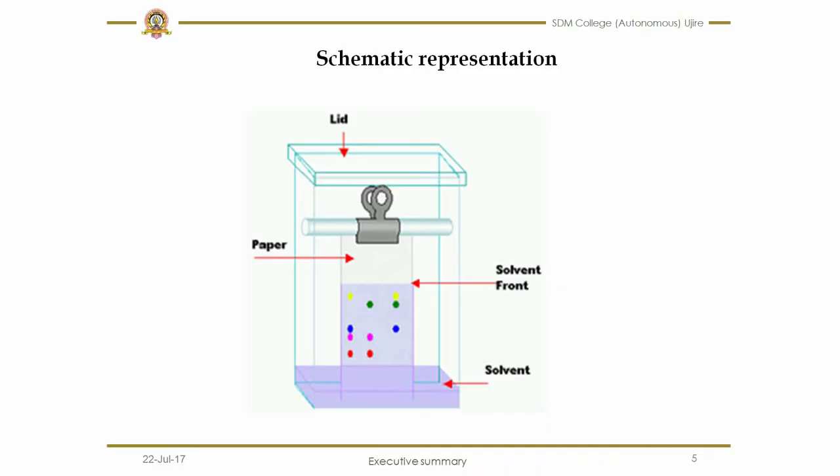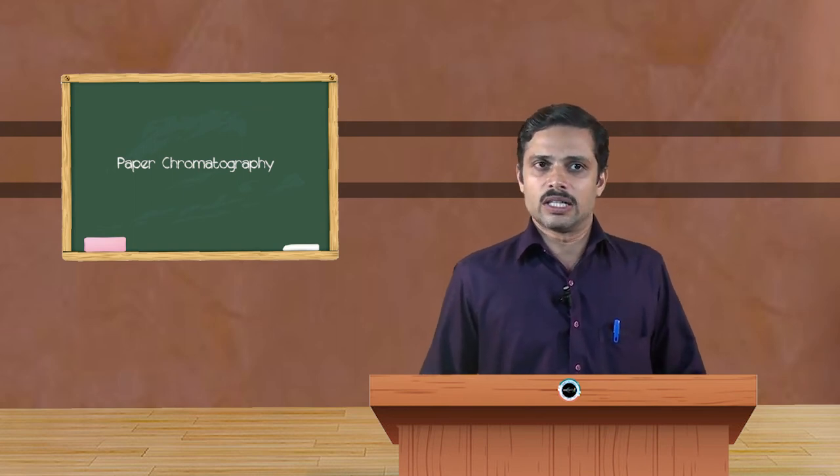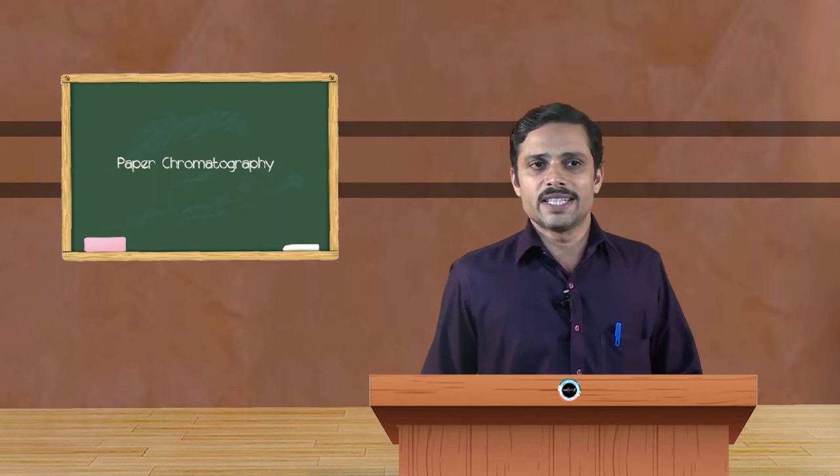It is fine if the spots are visible when the compounds present are colored ones. If they are not colored, then the paper should be dried and it can be seen under UV light, ultraviolet light, so that they can be seen easily. Or one has to spray the spraying agents, which will impart specific colors for different components present. Or it can be dipped in the iodine chamber, where iodine vapors will interact with all the components present on the filter paper and they appear brown colored. These are the techniques to identify the spots.